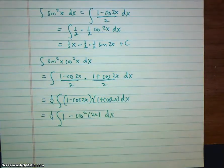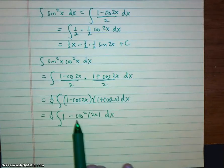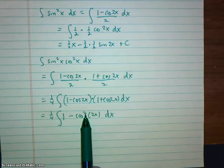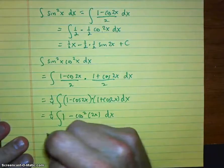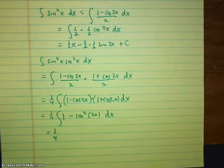But look what we have. We did a whole bunch of work. We still have cosine with an even power. So we actually need to do that power reduction formula again.